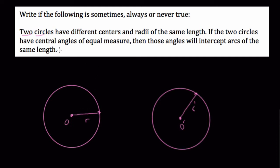So then they ask us if they have central angles of equal measure, then those angles will intercept arcs of the same length. The answer is always, because if we have two circles, let's say this is the arc we're forming here, and I'll draw it again over here.